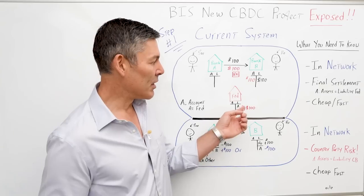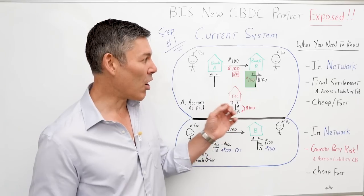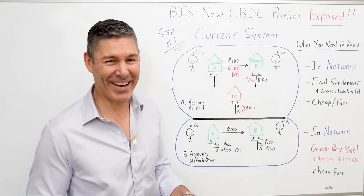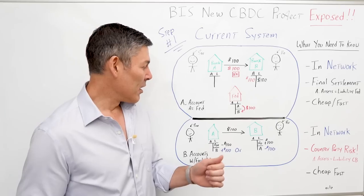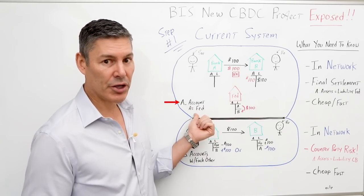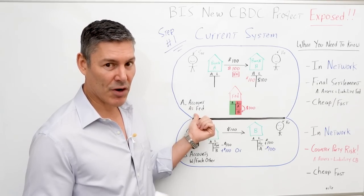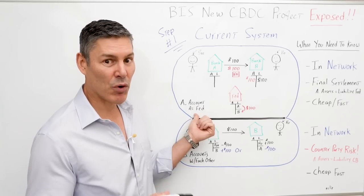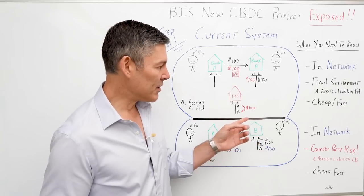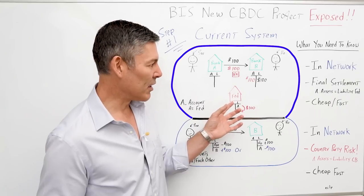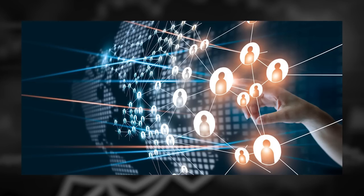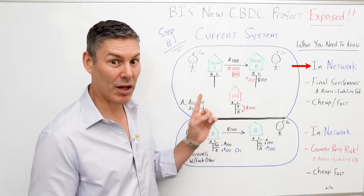That was the money they owed Joe. Now Bank B has the $100 in bank reserves, but they also have that additional $100 liability that they now owe the average Ho. I want to point out that this first example assumes both banks have an account with the Fed and want to settle using the Fed's balance sheet. The key thing to know here is this blue circle represents the fact that all of these transactions were in the same network — that word is very key throughout this video.